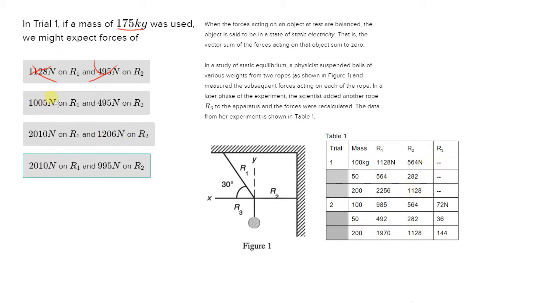For our second answer choice, we see that 1005 Newtons on R1 is actually less than the force on R1 at 100 kilograms. And we know we expect it to be more. So that's wrong. And this is the same answer as before, wrong for the same reasons.